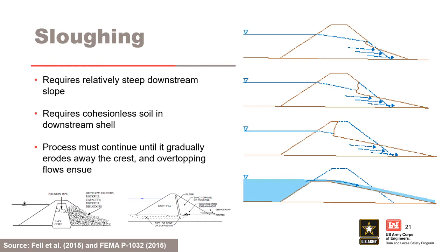Sloughing is the third internal erosion breach mechanism. For sloughing to occur, the downstream face would have to be relatively steep, and the downstream shell would have to be comprised of cohesionless soil — probably sandy gravel or gravelly sand, possibly with some silty fines. Increased seepage would have to discharge into the downstream shell, as shown in the cross section for a concentrated leak in the core of a zoned embankment, or for an internal erosion into the foundation. The over-steepening and progressive slumping process would have to continue until it gradually eroded away the crest and allowed the reservoir to overtop the embankment. Sloughing is a slowly developing breach mechanism, which should take days or weeks to lead to breach.